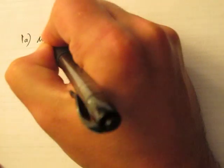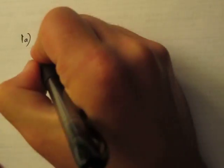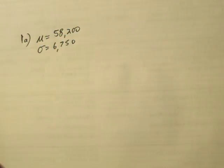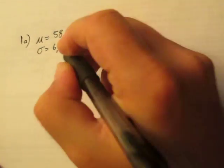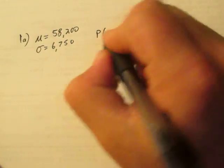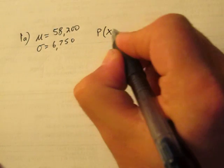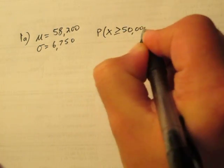Here's the information we have from 1a. We know the mean is $58,200, the standard deviation is $6,750, and we're trying to find the probability that the income of a single teacher is at least $50,000.